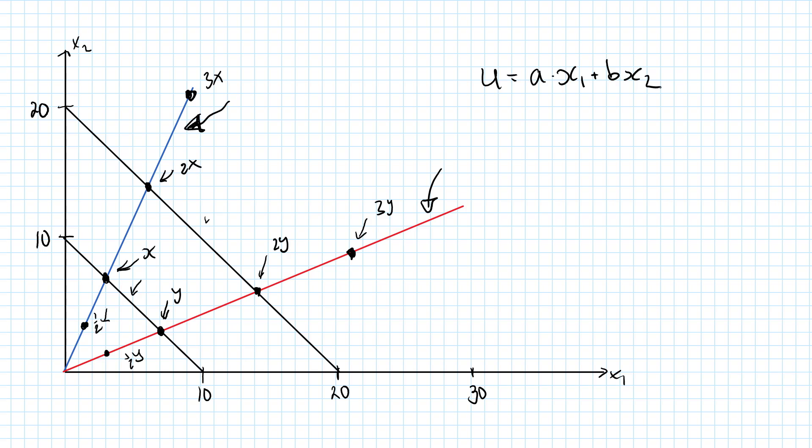If the consumer is willing to substitute the goods in a one-to-one ratio as in this example, then we can pick a to be equal to one and b to be equal to one.